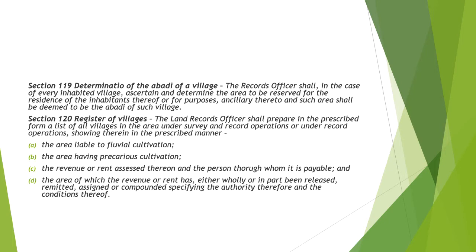Section 120 talks about the register of villages. The land record officer has to prepare in a prescribed form a list of all the villages in the area under survey and under record operations, showing therein: the area liable to full cultivation, the area having precarious cultivation, the revenue or rent assessed therein and the person through whom it is payable, and the area of which the revenue or rent has either wholly or in part been released, remitted, assigned, or compounded, specifying the authority therefore and the conditions thereof.